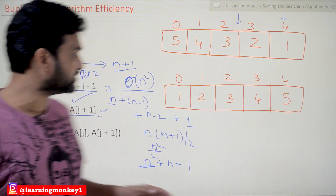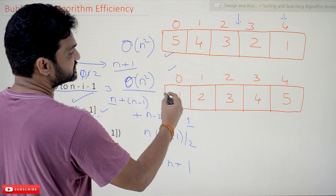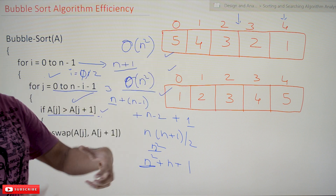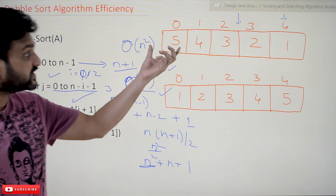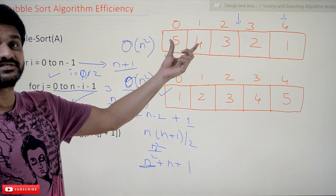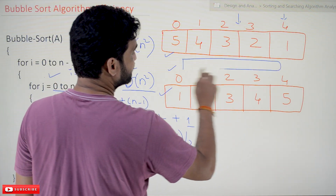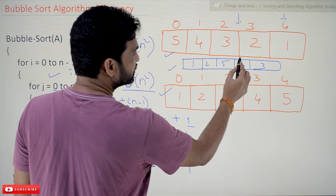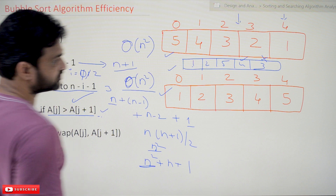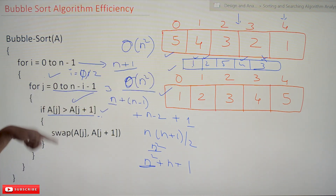So the original algorithm takes Θ(n²) comparisons whether it is the best case, worst case, or average case. In the average case, for example with input [1, 2, 5, 4, 3], some elements like 1 and 2 are already in sorted positions while others are not. Even so, all comparisons are still done. That important point distinguishes the original from the optimized algorithm.